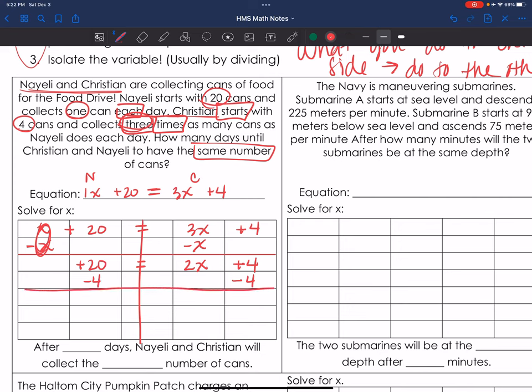Again, drawing my horizontal line because now I'm working vertically. 20 minus 4 is 16. Bring down my equal sign. Bring down my 2x. And then 4 minus 4 is 0. Last step, I'm going to divide both sides by 2 to undo that multiplying by 2. 2 divided by 2 is 1. So I have a beautiful x equals 8. So after, what this means is after 8 days, Nayeli and Christian will collect the same number of cans.